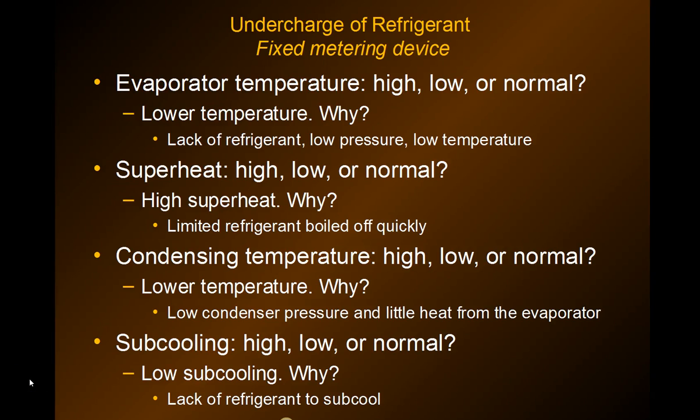Our first example is an undercharged system that's a fixed metering device with a cap tube. This happens fairly often with cap tube systems. Those are usually the small prep tables used to hold meat, deli, and produce for making sandwiches or pizzas. Ingredients are sometimes stored in canisters on top, and underneath there's a small storage area as well.